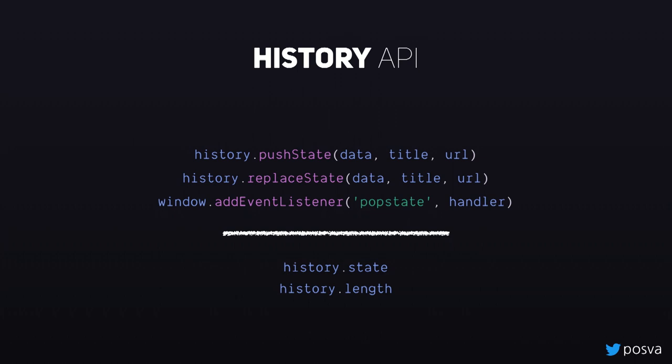We start off by talking about the core of the history module — that's the History API. I know we're barely getting started and it's already confusing. Naming things is not easy. The main API here is what allows us to control the URL. We have these two functions with the exact same signature: pushState and replaceState. The first argument is the data, which is reflected on the history state right after. The title is a string but it's ignored — like web components, we all know it's there but we don't use it. Then you have the URL, which is what you want to see on the address bar. We push things into a stack, and we can pop them. It's a special stack because we have the length, we can go in between, we can go back. We also have the popstate event that lets us know when the user is changing the URL using the browser interface.